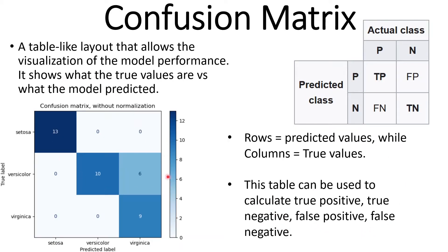Here is an example of reading a confusion matrix. In this case the true values and predicted values may be flipped depending on orientation. For Setosa, the model predicted 13 and the actual number that was Setosa was also 13. For another example, the model predicted 6 samples to be Virginica, but those samples were actually Versicolor. That is how to interpret a confusion matrix, and I have a dedicated video on it.